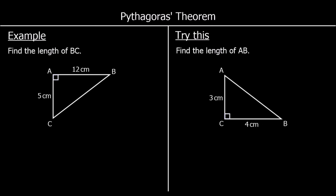Pythagoras' theorem is a rule for right angled triangles. It says that the longest side squared is equal to the sum of the two shorter sides squared. We can write that as a squared plus b squared equals c squared. We call the longest side the hypotenuse and you always find it opposite the right angle.